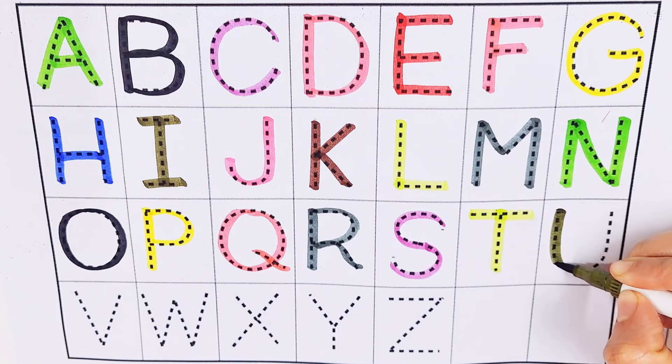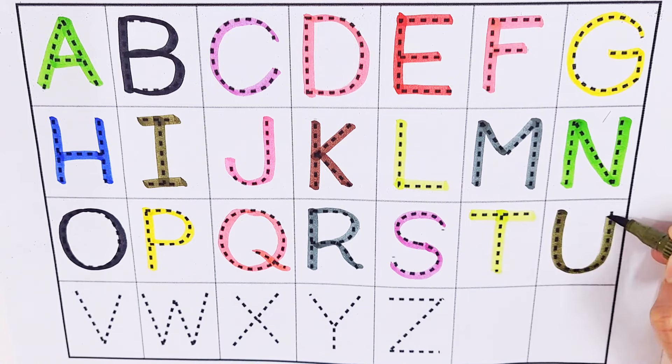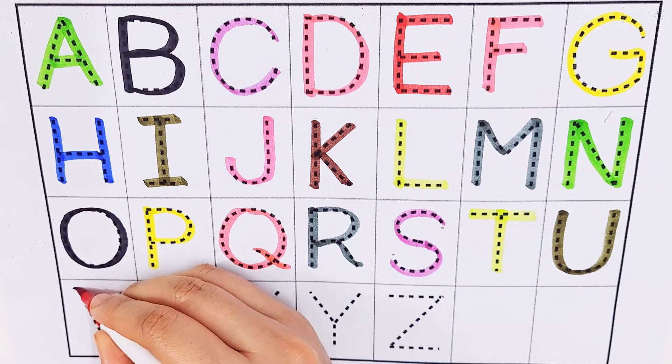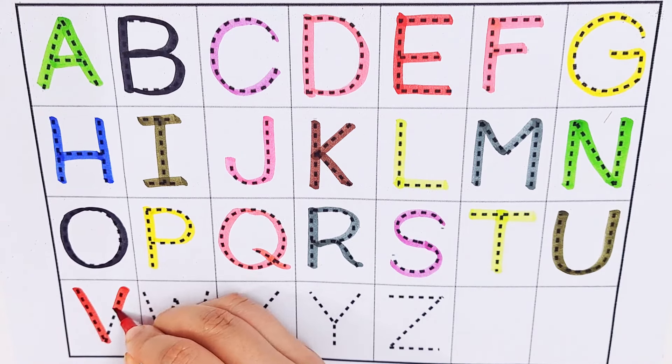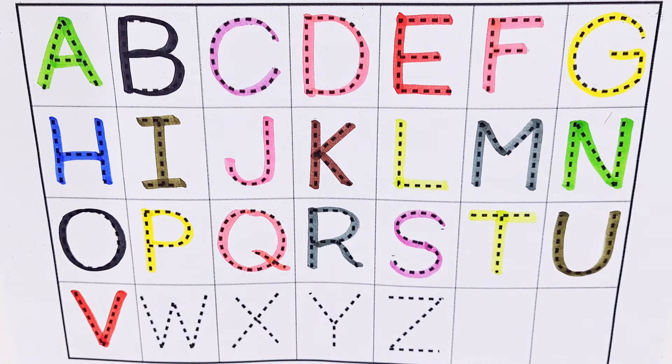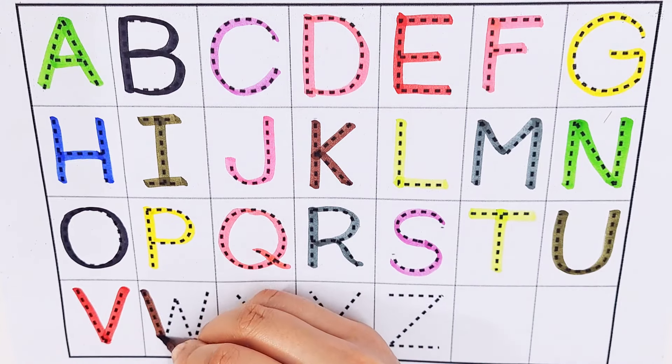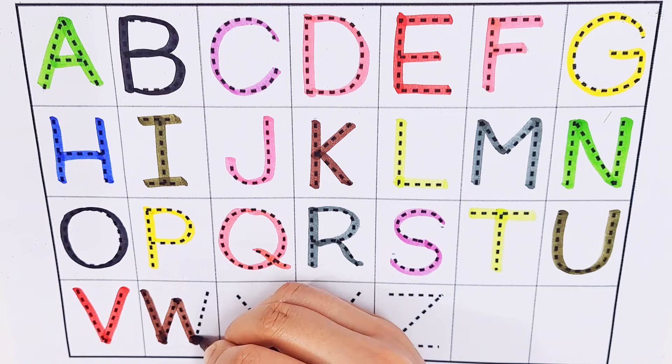Olive color. U, U for university. Red color. V, V for vulture. Brown color. W, W for watch.